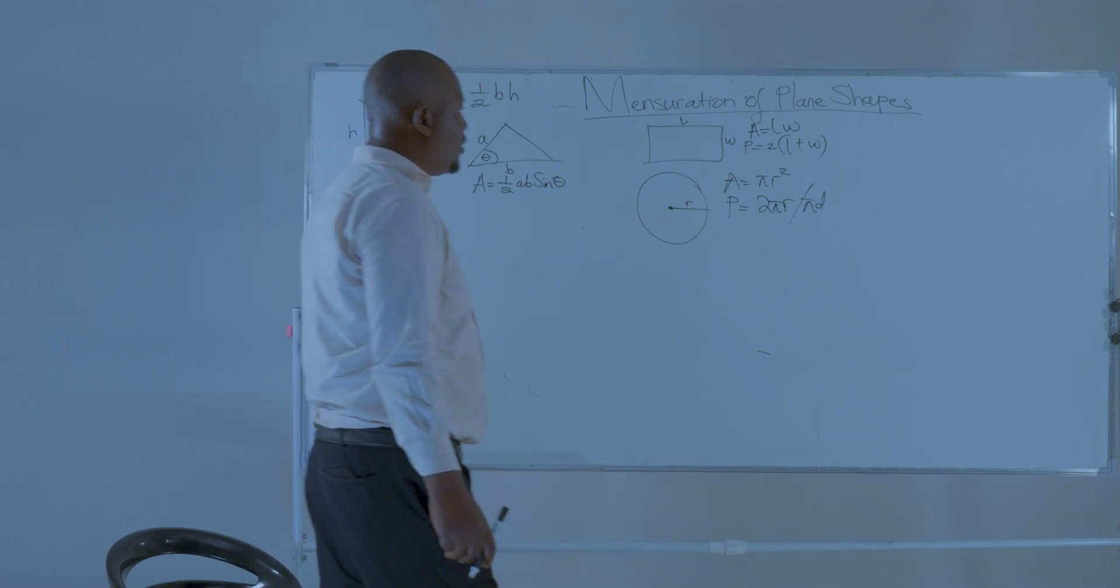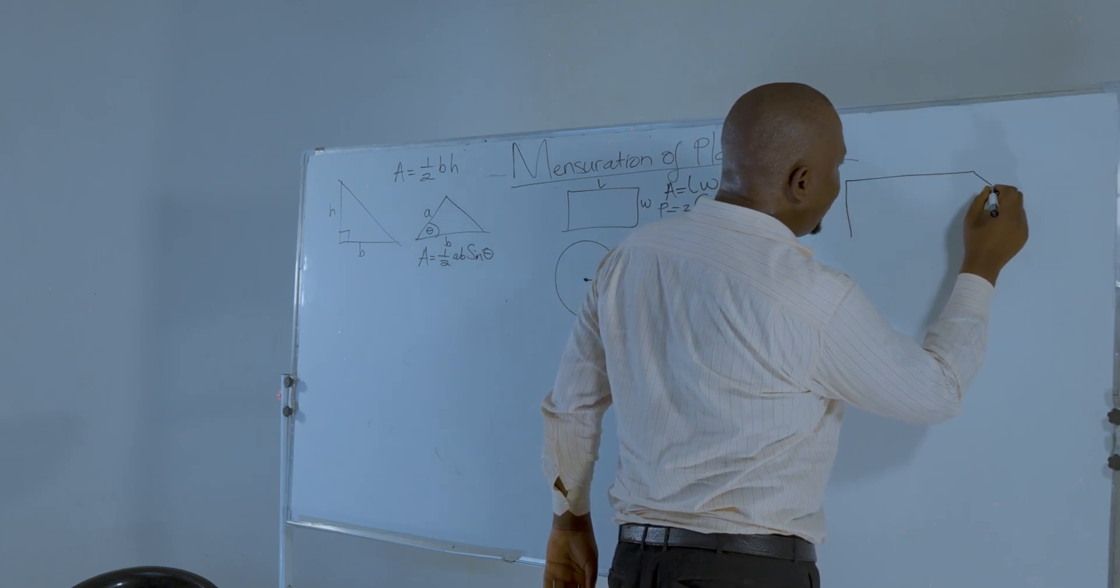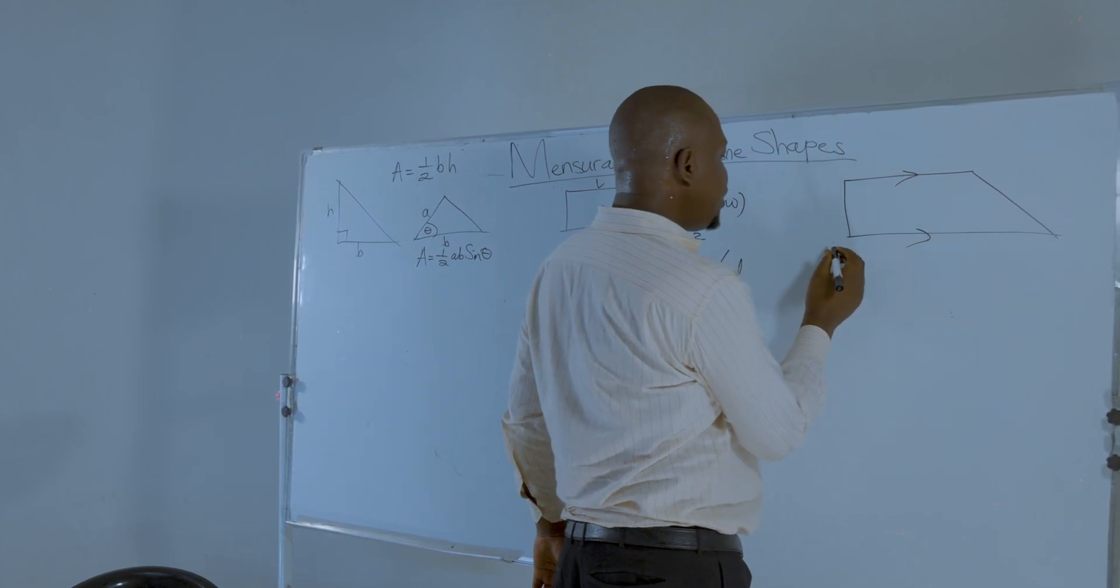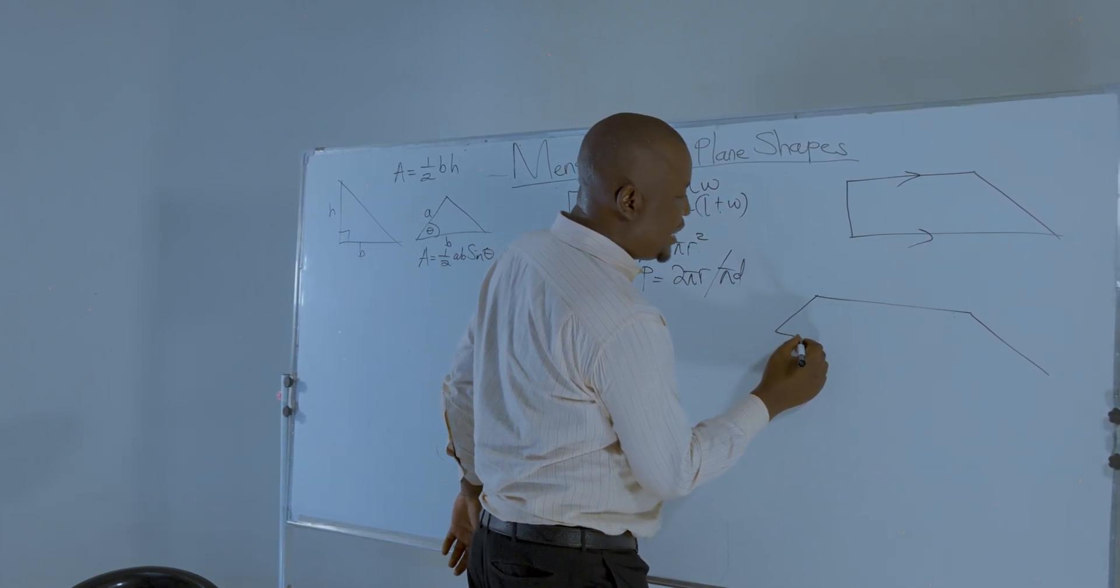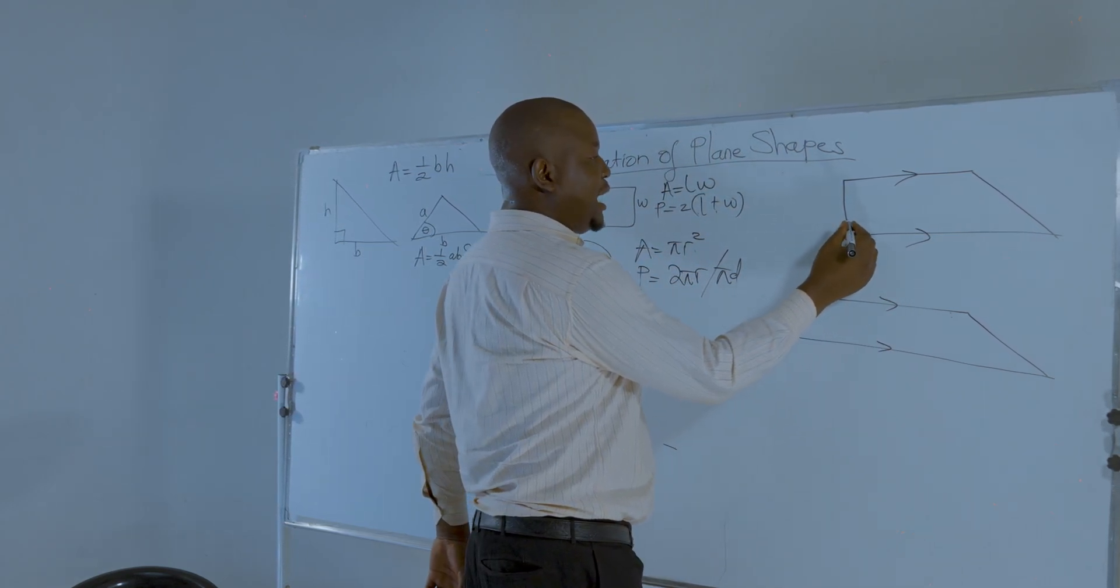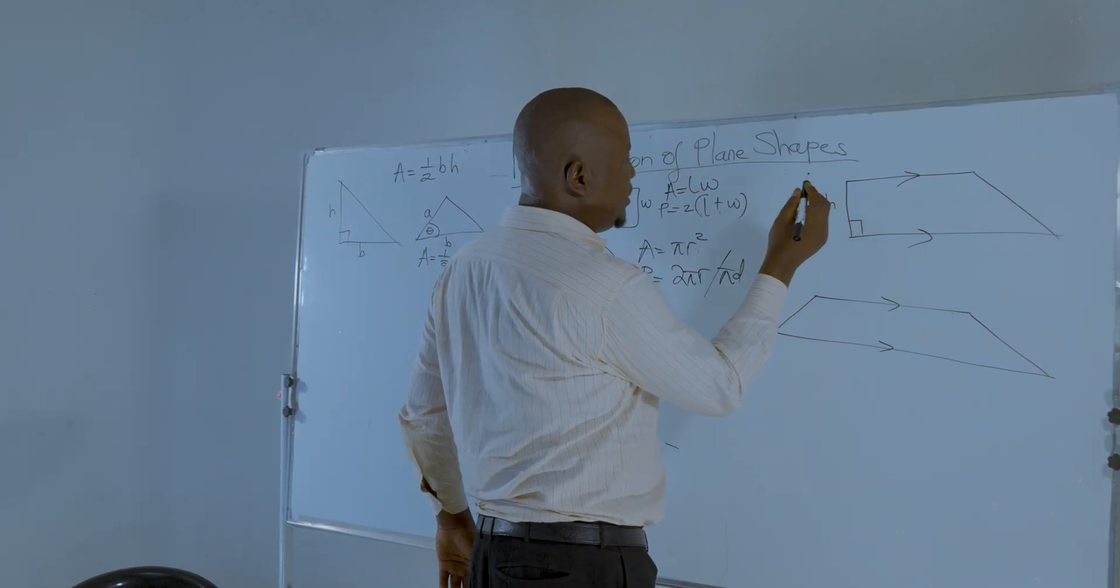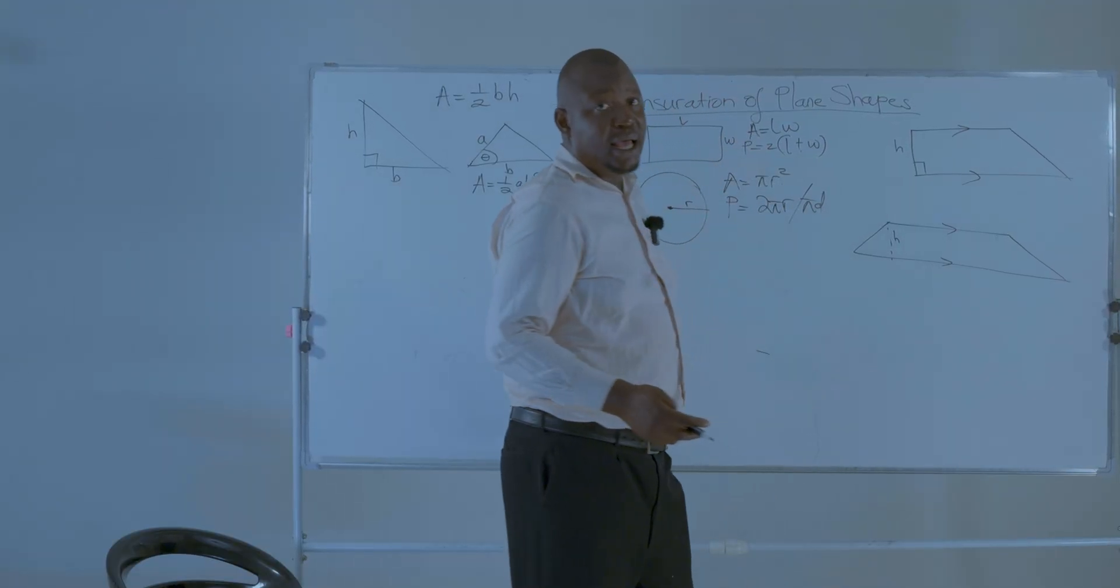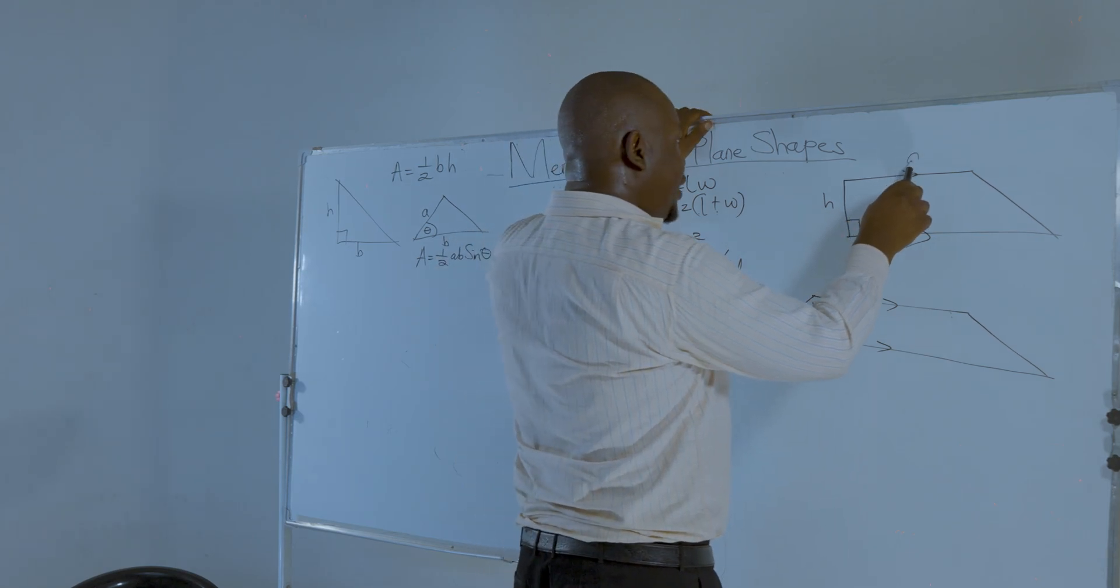The next shape we're going to look at is a trapezium. A trapezium is a quadrilateral which contains two parallel sides. This is one example of a trapezium, this is the other example of another trapezium. So in a trapezium, we have a pair of parallel sides and then we have the height of a trapezium. In this case, this is the height. In that case, this is the height of the trapezium. And the parallel sides are denoted as A and B.